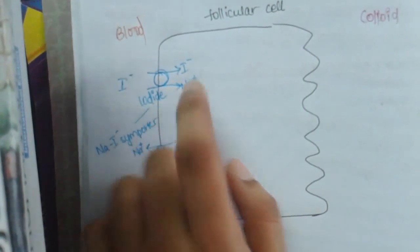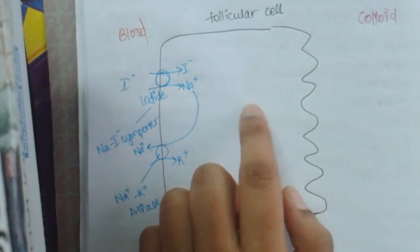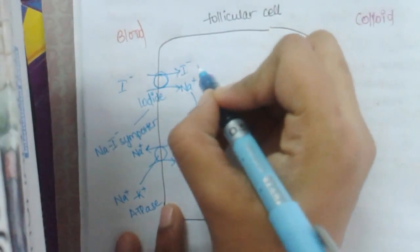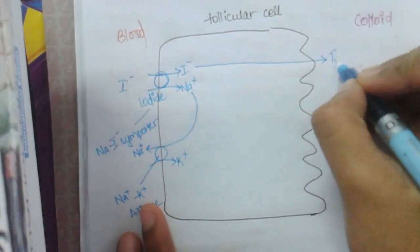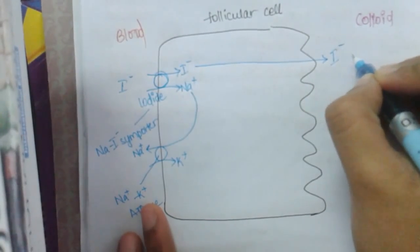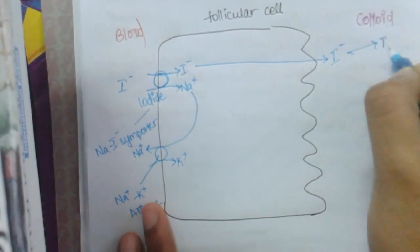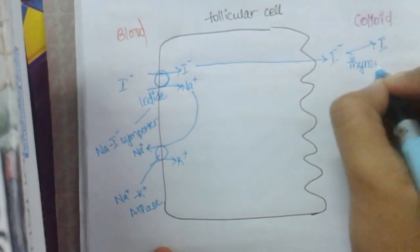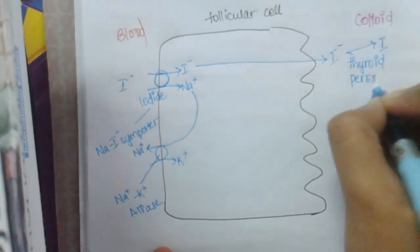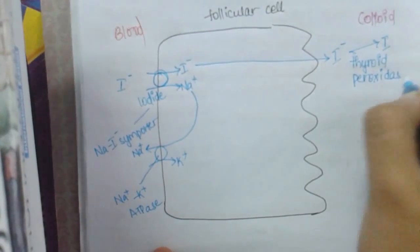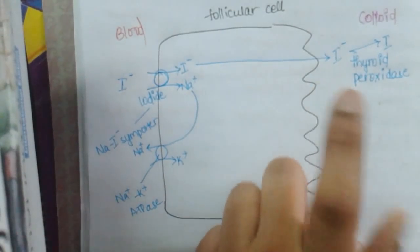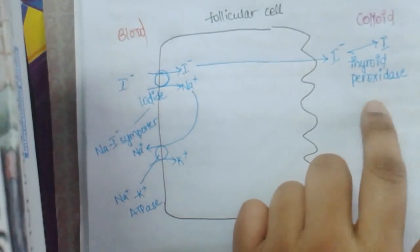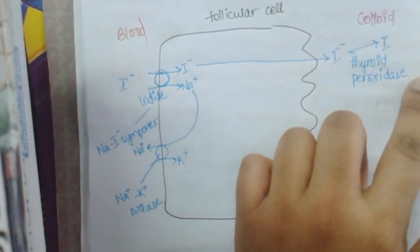This iodide form should be converted to iodine. For this to convert it into iodine, it should enter the colloid. So this iodide enters the colloid and in the colloid it is converted to iodine by the enzyme thyroid peroxidase. This thyroid peroxidase is present only in colloid. So the entry of iodine from the follicular cell into the colloid is a prerequisite for conversion of iodide to iodine.